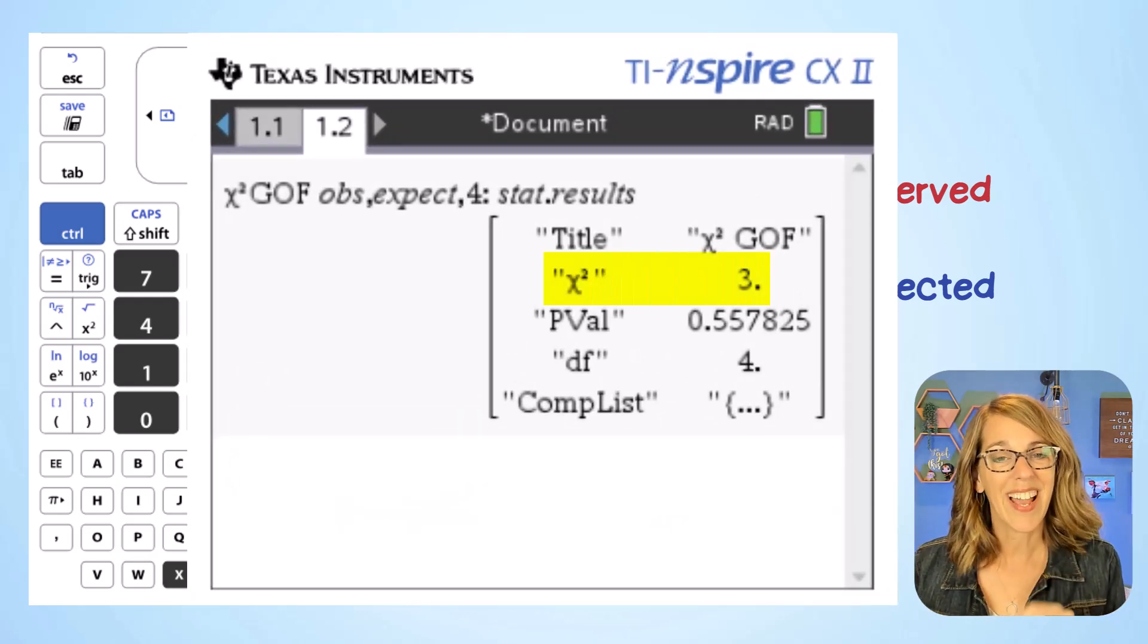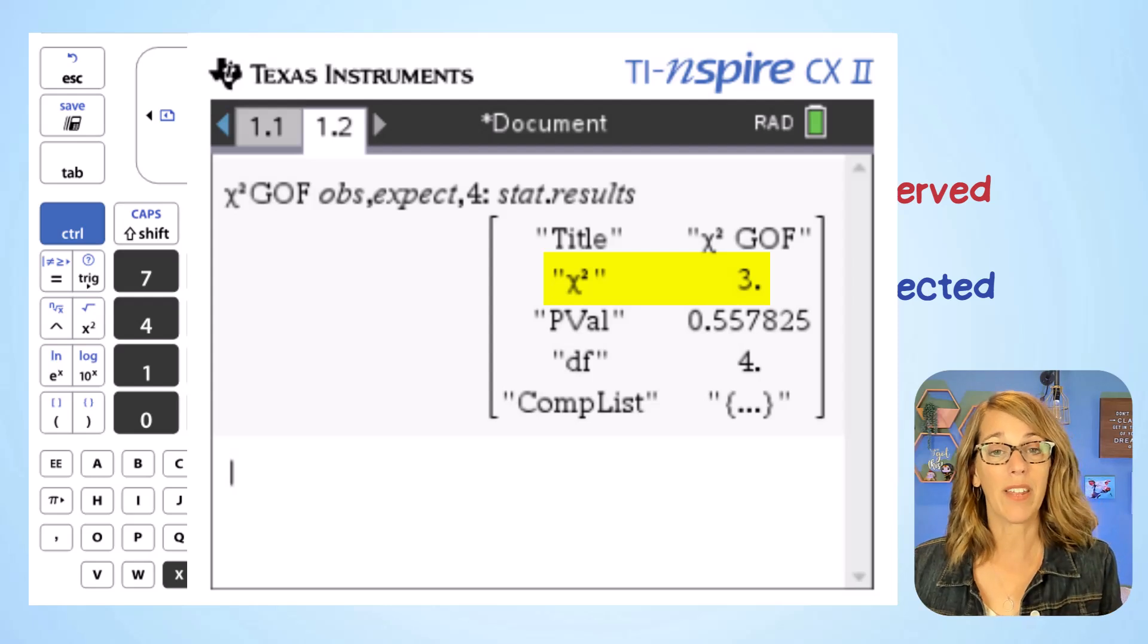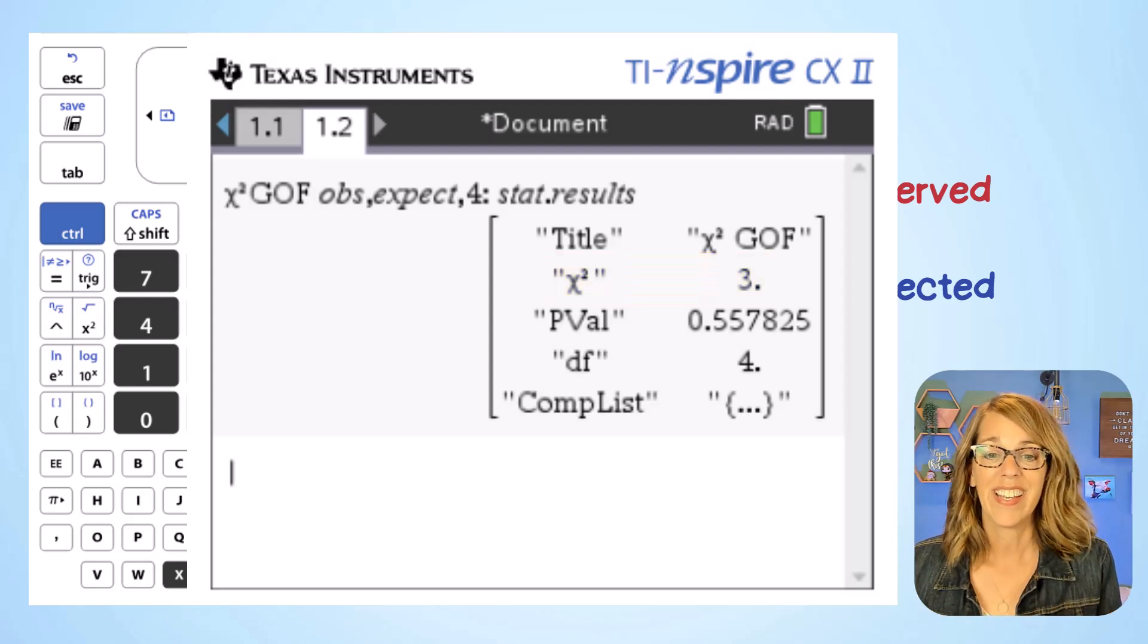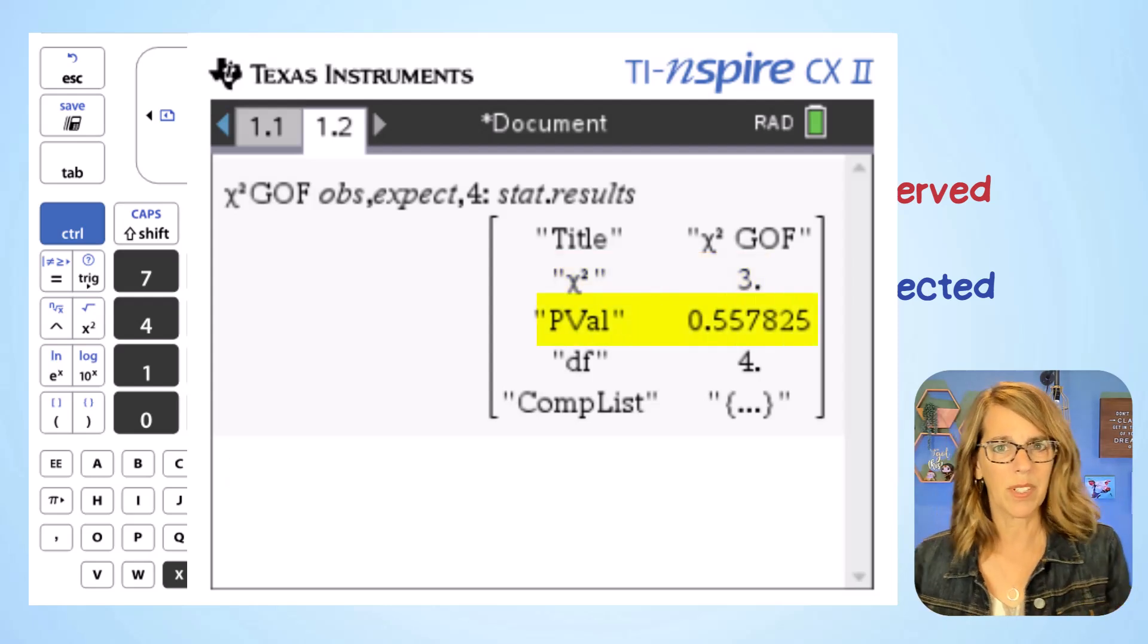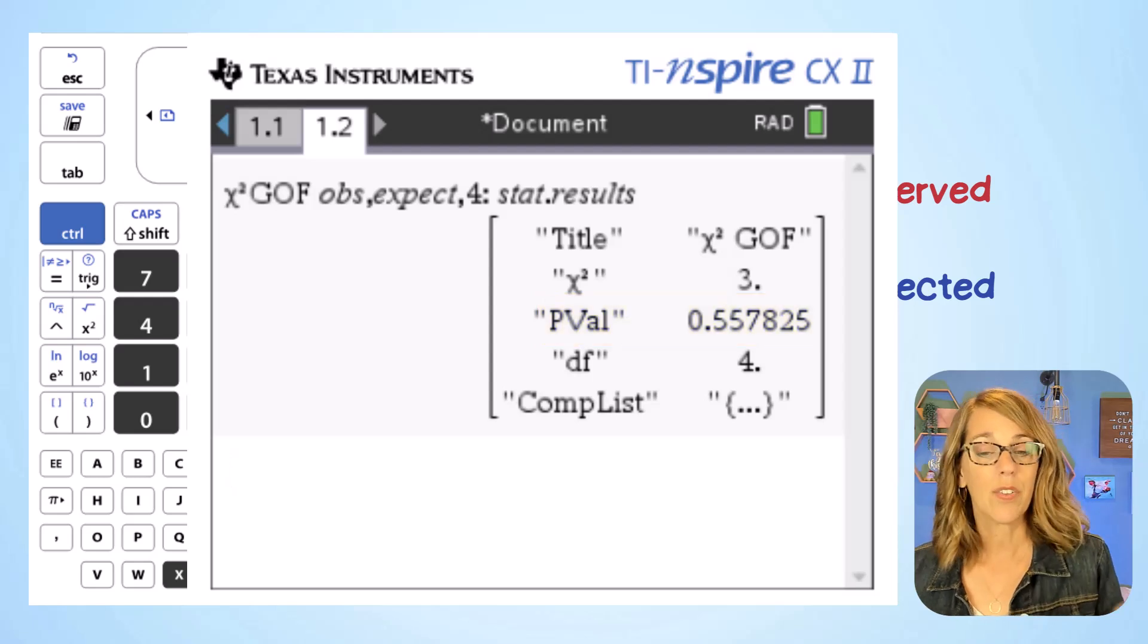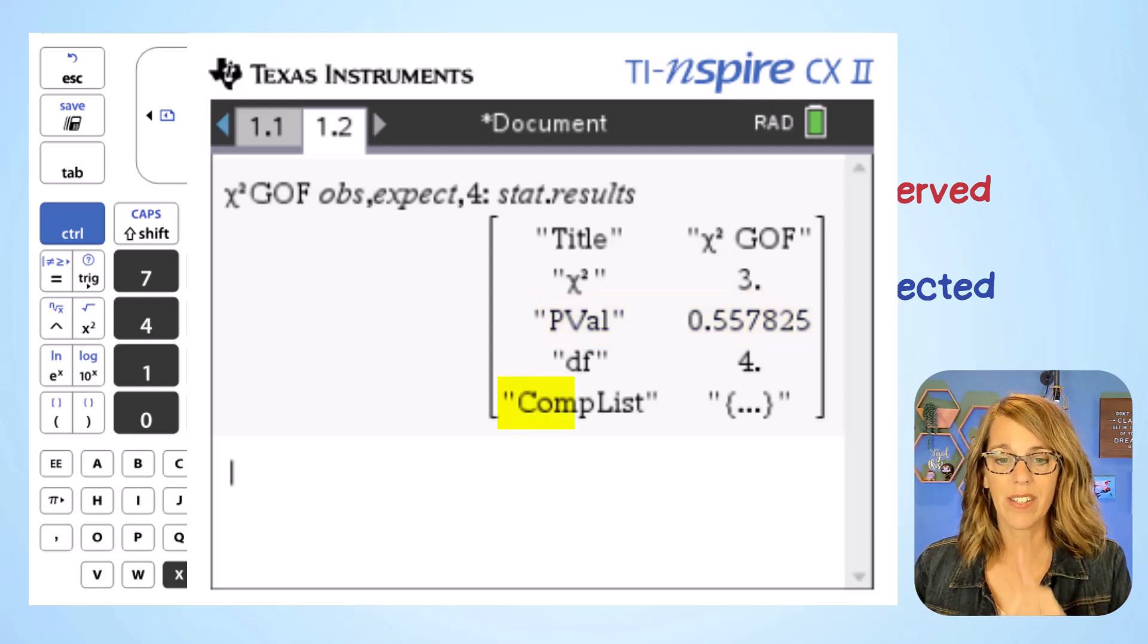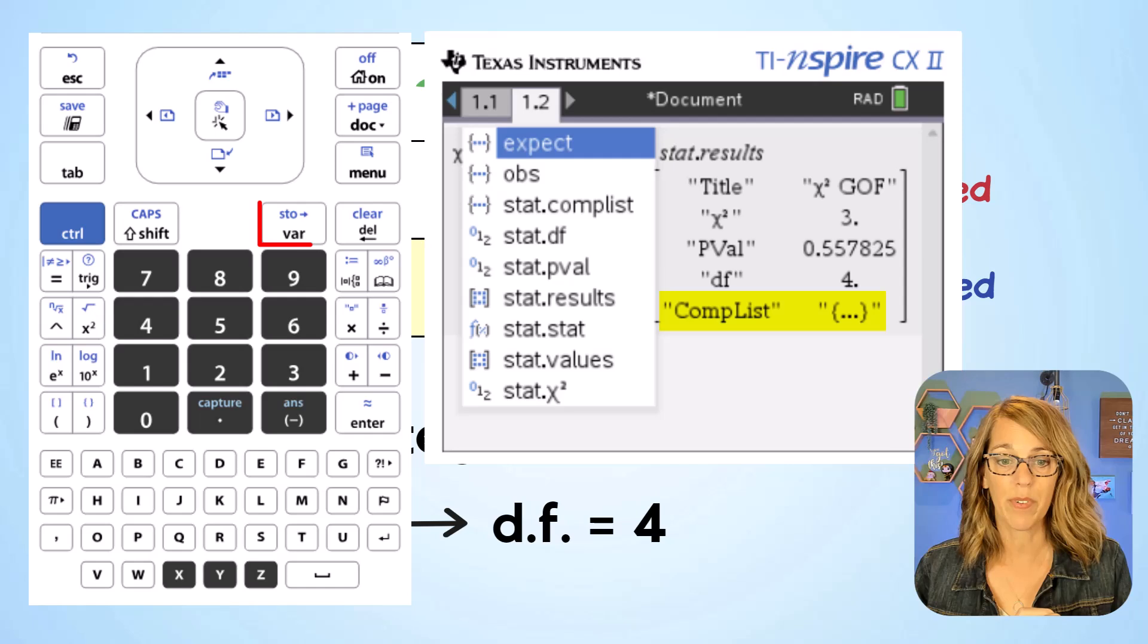These results include our test chi-square value, that's the answer to the formula that we saw for our data. It also gives us the p-value, which is actually a really large p-value here. Degrees of freedom, which we typed in, and then this comp list you can view it by going to variables.